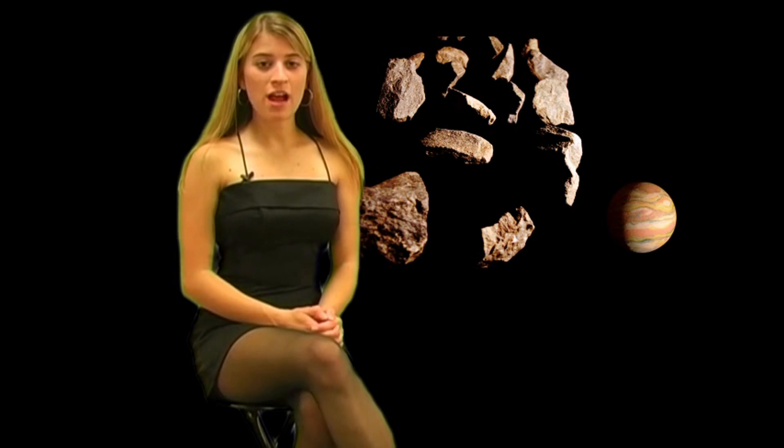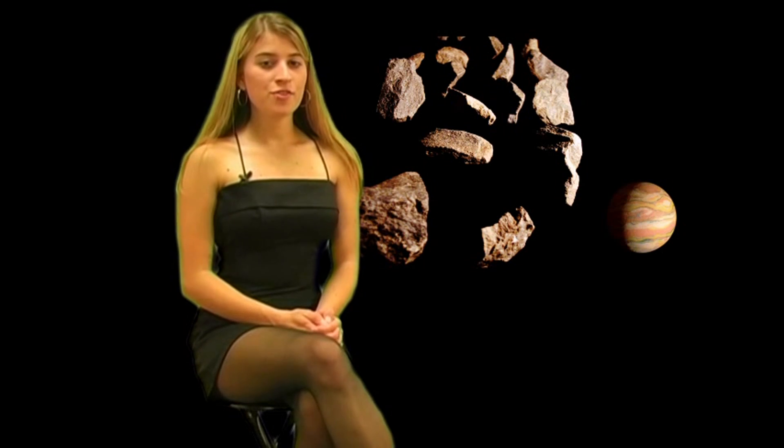Jupiter has a huge gravitational pull. For example, if a huge mass of something came towards Jupiter, it would grab onto it, pull it into its orbit, and make it into a moon. Scientists believe that this is how Jupiter has gotten most of his moons.